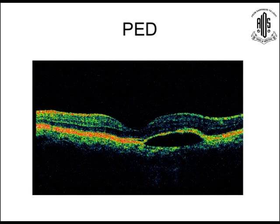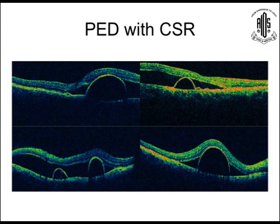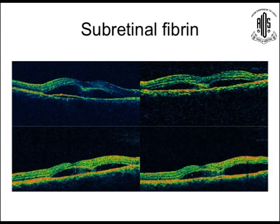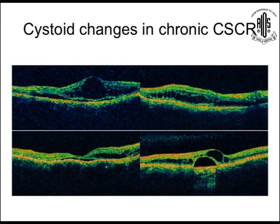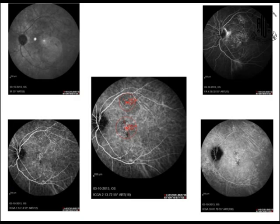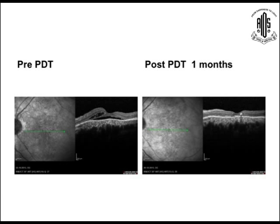Some more OCT examples: pigment epithelial detachment with central CSR, showing subretinal fluid and PED side by side. Subretinal fibrin is visible — this is the typical sign. Dr. Nazeban mentioned the neurosensory retinal dip with fibrin deposition. Also shown are cystoid changes in the outer retinal layers in chronic CSC. In one case with infrared, angiogram, and ICG early, mid, and late phase — the treatment areas are identified, and the pre- and post-photodynamic therapy OCT shows flattening at one month with some residual fluid but much improved.